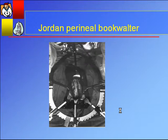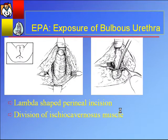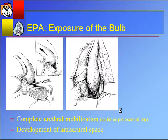I quote patients about a 15% rate of transient peroneal nerve neuropraxia — tingling in the dorsum of the foot — that almost always resolves in about 48 hours. The retractor I use, having trained with Jerry Jordan, is the Jordan Perineal Bookwalter — a modified Bookwalter that attaches to the bed and gives excellent exposure to the perineum, especially in hefty patients with a very thick perineum. The first step in performing excision and primary anastomosis is a perineal incision — I prefer a lambda-shaped incision just medial to the ischial tuberosity. Dissect through Colles' fascia down to the ischiocavernosus muscle, transect the muscle in the midline, then mobilize the bulb.